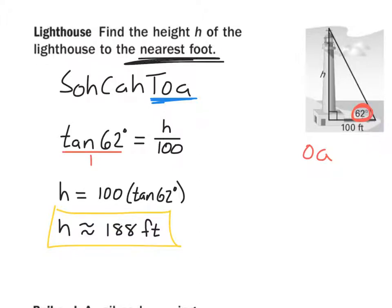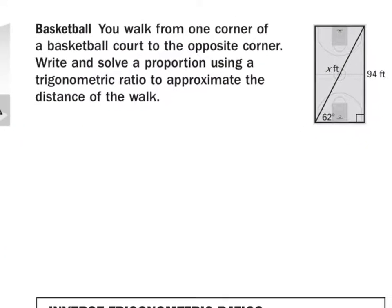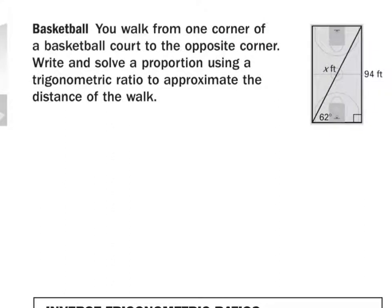Alright, let's try the next one right next to it here. It says we walk from one corner of a basketball court to the opposite corner. We want to write and solve a proportion using a trigonometric ratio to approximate the distance of the walk. So essentially what's going on here, we have a right triangle, we're solving for X. Now if you're not seeing which triangle I'm talking about, we want to deal with this guy here in blue.